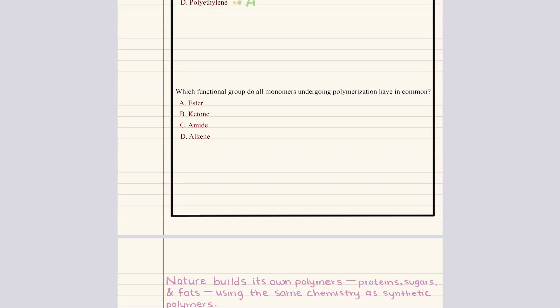The second question asks which functional group do all monomers undergoing addition polymerization have in common? A says ester, B says ketone, C says amide, D says alkene. In an addition polymerization, the monomers must contain a carbon-carbon double bond so that the pi bond can break and form new single bonds that link the chain together. That means every monomer must have an alkene functional group. So the correct answer to this question is D.